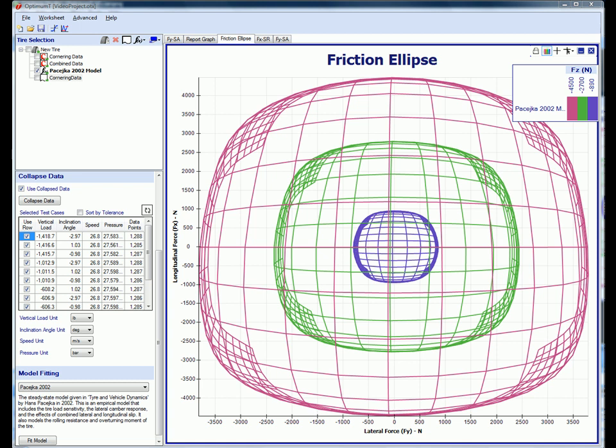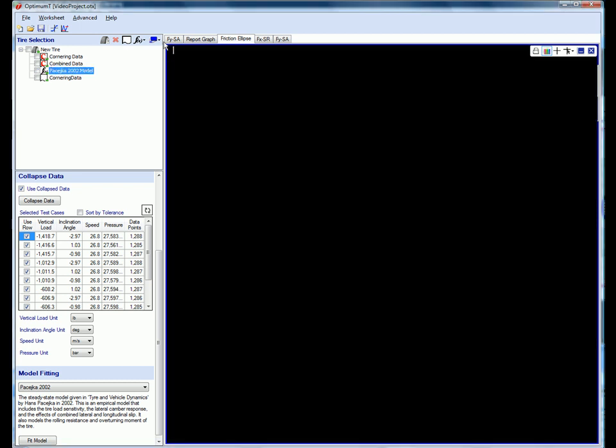Now we choose the variables that each column represents along with the unit. In this case, I'm going to use a template that I've already set up. Now that we've imported some data, we can plot it. In this case, we're plotting the lateral force versus the slip angle.